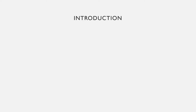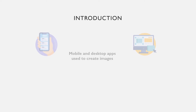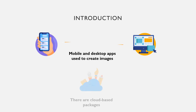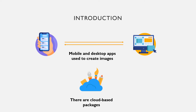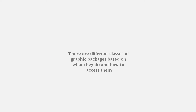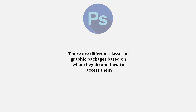Types of graphic packages. The types of graphic packages discussed in this tutorial are those approved for junior secondary or junior high schools. A computer graphic application package is a software used to create and edit shapes and images. There are different classes of such packages based on what they can do and how they can be assessed.